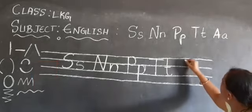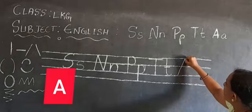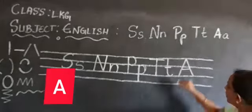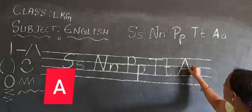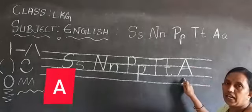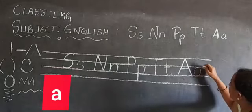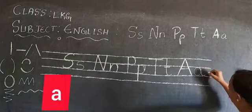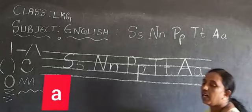After T comes A. How should you write A? Left slant line, right slant line, and a sleeping line — that becomes capital A. For small A: circle written within two lines, and a curve or stroke like this — that becomes small A.